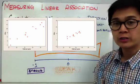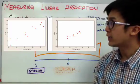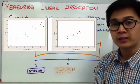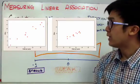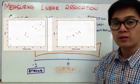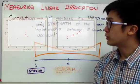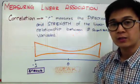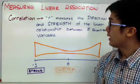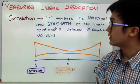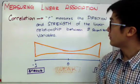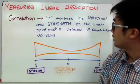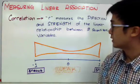For today, we're going to learn how to use a statistical measurement that will give us a numerical value telling us the strength of the relationship between two quantitative data sets. We call it the correlation. In statistics, correlation is denoted by the letter R, and it measures the direction and the strength of the linear relationship between two quantitative variables.